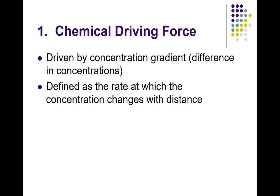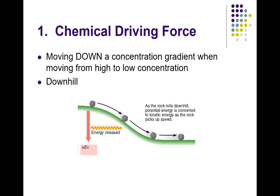A chemical driving force is created by a concentration gradient — the rate at which concentration changes with distance. If you have high concentration inside and low outside, the chemical driving force moves things from high to low concentration. It uses the principle of entropy, going to more disorder, as long as it can pass through the membrane. Chemical driving forces move down the concentration gradient, like a ball rolling downhill from high to low potential energy.